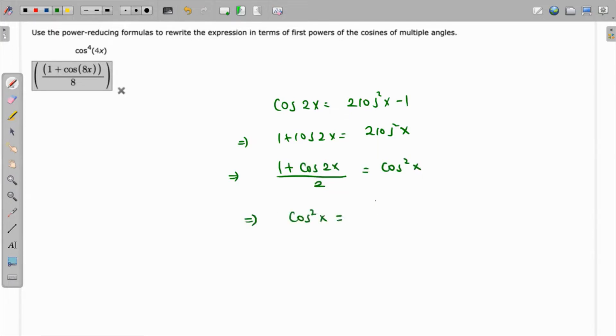Flipping the equation, we have cos²x = (1 + cos 2x)/2. But we're not interested in cos²x; we need 4x instead of x. We'll replace x by 4x, so this 2x will be replaced by 8x because 4 times 2 is 8. So the corollary becomes cos² 4x = (1 + cos 8x)/2.